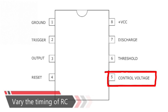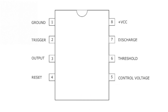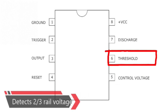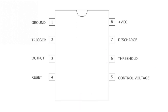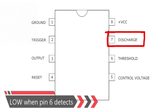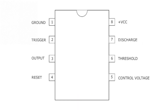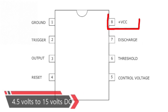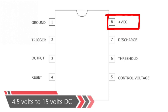Pin 6 — threshold — detects two-thirds of rail voltage to make the output low, but only if pin 2 is high. Pin 7 — discharge — goes low when pin 6 detects two-thirds rail voltage, but pin 2 must be high. Pin 8 — supply — connects to the positive power supply; this can be any voltage between 4.5 volts and 15 volts DC, but is commonly 5 volts DC when working with digital ICs.